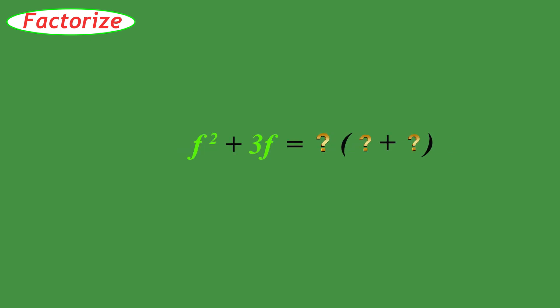Let's factorize F squared plus 3F. The factor that's common to both F squared and 3F is F. So F times what equals F squared? It must be F. And F times what equals 3F? It must be 3.